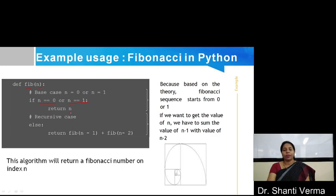Now, let's discuss the recursive case. The recursive case returns the first two preceding values sum. So, we can write fib(n minus 1) plus fib(n minus 2). This algorithm will return a Fibonacci number at index n, means the value existing at the index position of n.